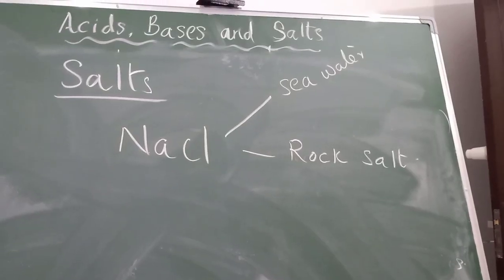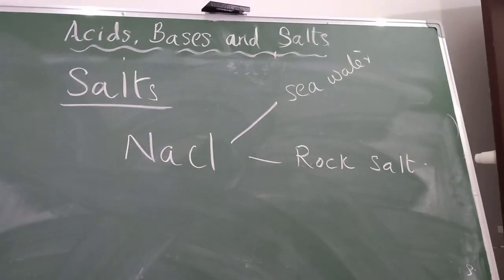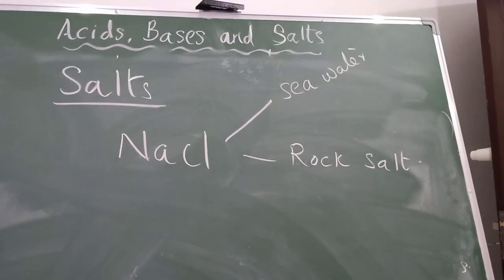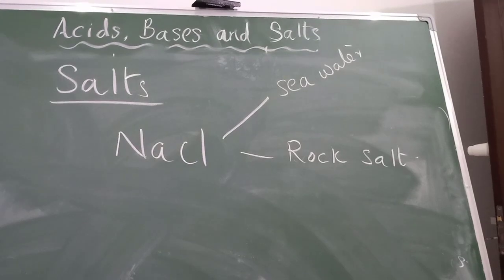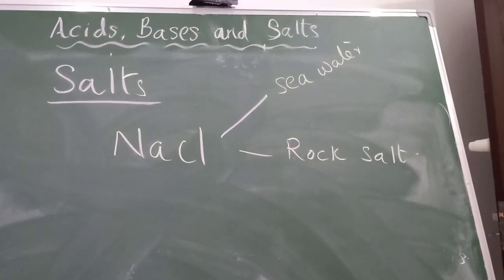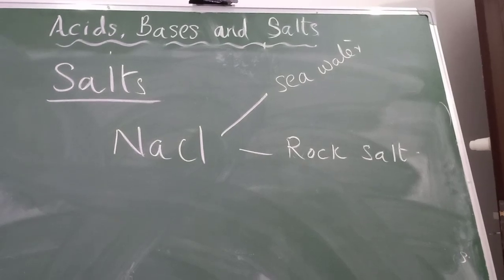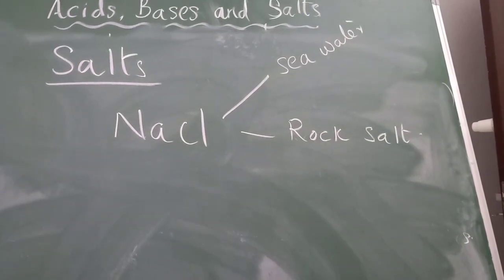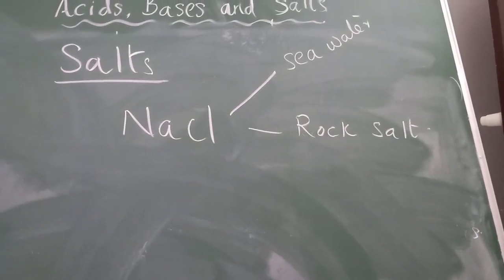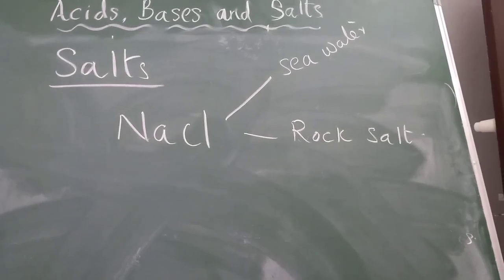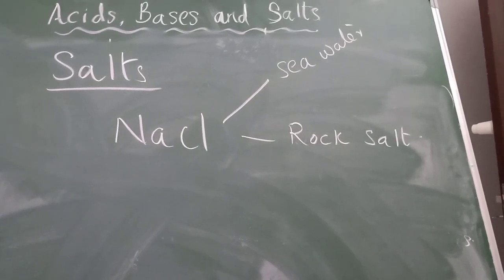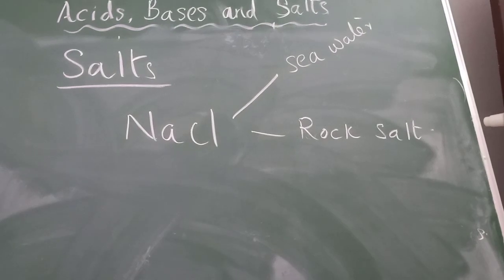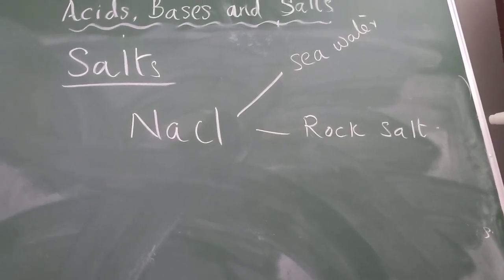Now let's move on to discussing specific salts. The first salt we are going to discuss is the common salt, sodium chloride. Common salt is usually obtained from seawater; the second source of sodium chloride is rock salt — natural deposits inside the earth. Rock salt usually contains a lot of impurities, so it appears brown in color. Sodium chloride is a raw material for various chemicals.